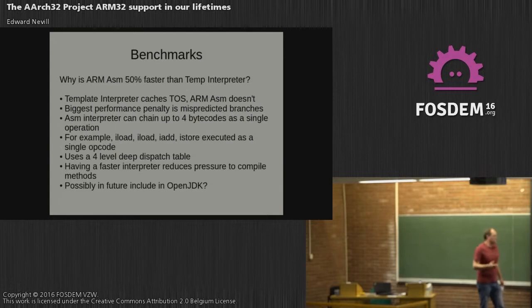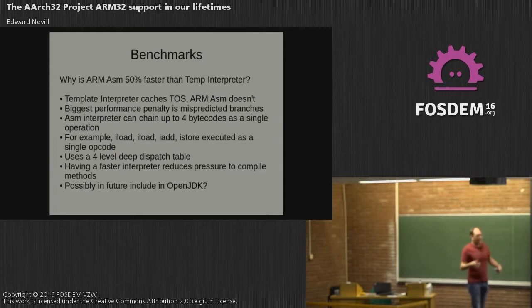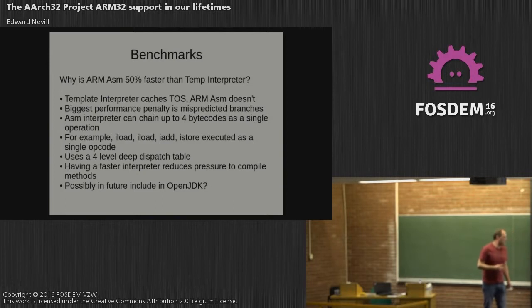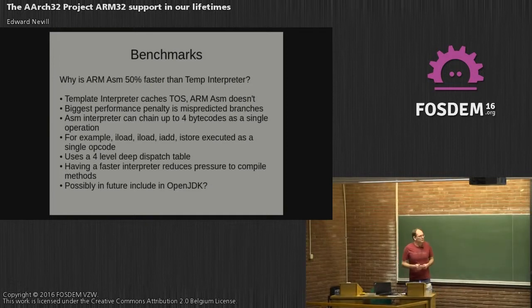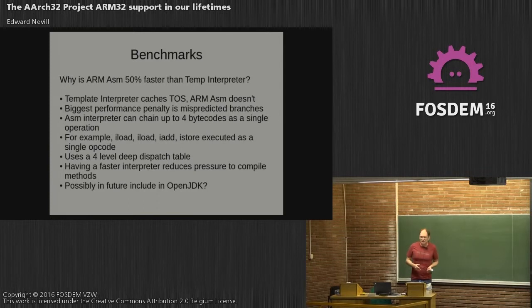Why do you want a faster interpreter when you have a JIT? A faster interpreter benefits the JIT because you don't have as much pressure to compile methods. It's possibly something to include in OpenJDK in the future, though it would be quite a big undertaking. For the ARM32 board, we're going to stick with the template interpreter for now, but it's an interesting idea for the future.